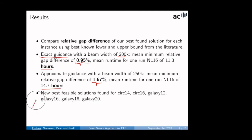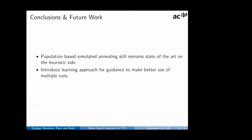Interesting, we do find new best feasible solutions, two for the circ instances, and four for the Galaxy instances. Still, we conclude that population-based simulated annealing remains state-of-the-art on the heuristic side, and further work is concerned with introducing a learning approach for the guidance to make better use of these multiple runs and learn something from the runs to feed back into a guidance function. Thanks for your attention, and I'm looking forward to your questions in the Q&A session afterwards.